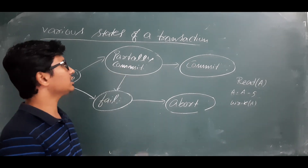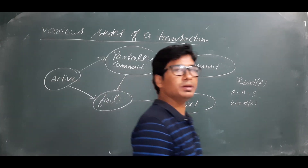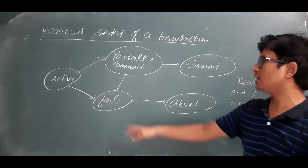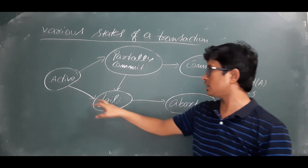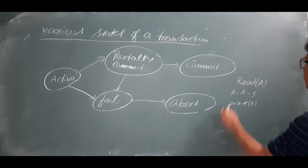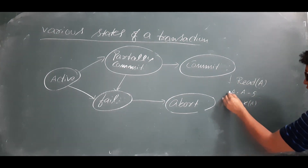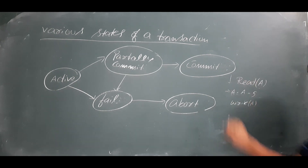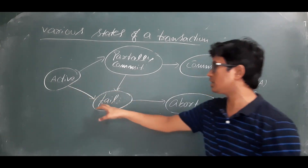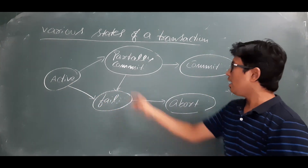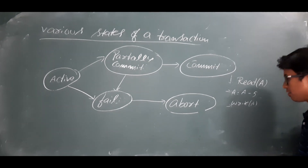Now when we are executing any transaction, because of some problem it can also go to the fail state. From an active state it can come to the fail state without partial commit — meaning you were executing the transaction, it was active, and then the transaction failed.